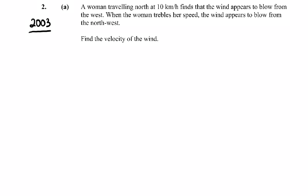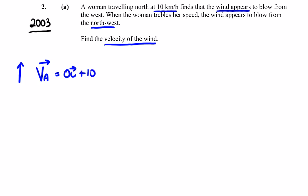Here we have the 2003 question two on relative velocity. A woman traveling north at 10 kilometers per hour finds that the wind appears to blow from the west. When she travels at her speed the wind appears to blow from the northwest. Find the velocity of the wind. When she's traveling 10 kilometers north, she's going in the j direction, so the velocity of the woman is zero in the i direction plus 10 in the j direction. The velocity of the wind appears to be from the west, which is in the positive i direction.